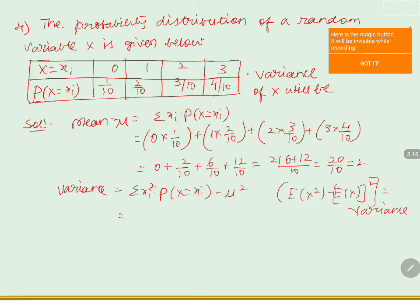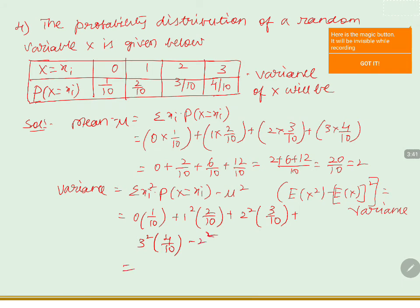So variance equals sigma xi squared into P of X equals to xi, minus mu squared. That is 0 into 1 by 10, plus 1 squared into 2 by 10, plus 2 squared into 3 by 10, plus 3 squared into 4 by 10, minus 2 squared. Simplifying: 0 plus 2 by 10 plus 12 by 10 plus 36 by 10, minus 4. That gives 50 by 10 minus 4, which is 5 minus 4, equals to 1.